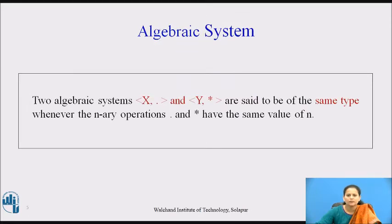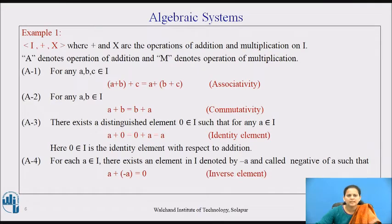Two algebraic systems (X, ·) and (Y, ★) are said to be of the same type whenever the n-ary operations · and ★ have the same value of n. For example, the algebraic system (I, +, ×) where I denotes the set of integers, and + and × are the operations of addition and multiplication respectively on I. Let A denote the operation of addition and M denote the operation of multiplication.